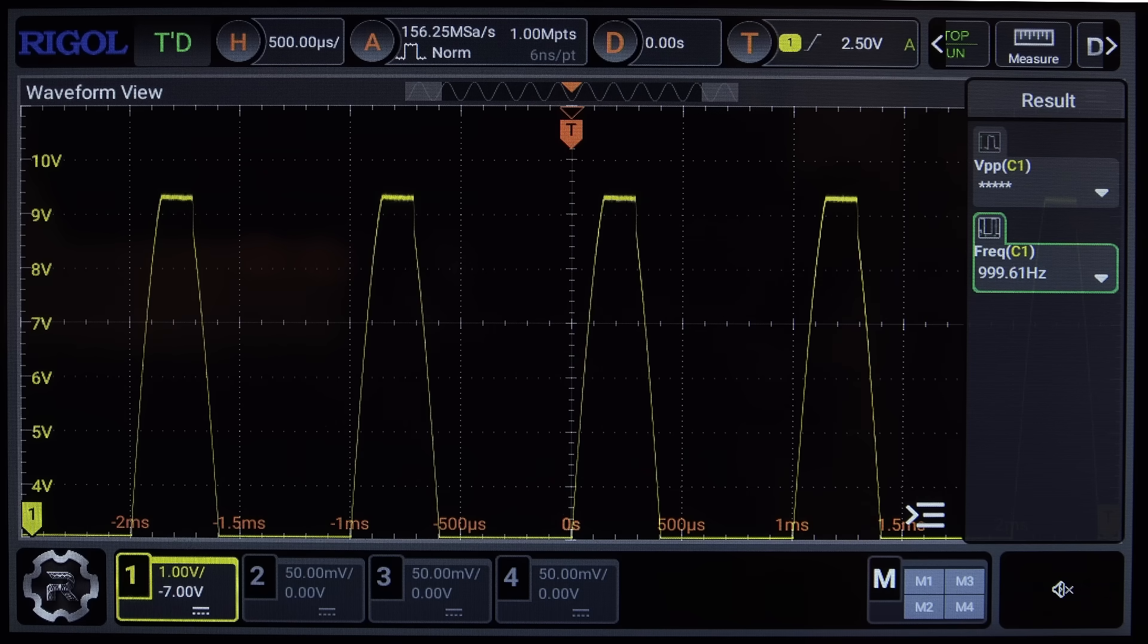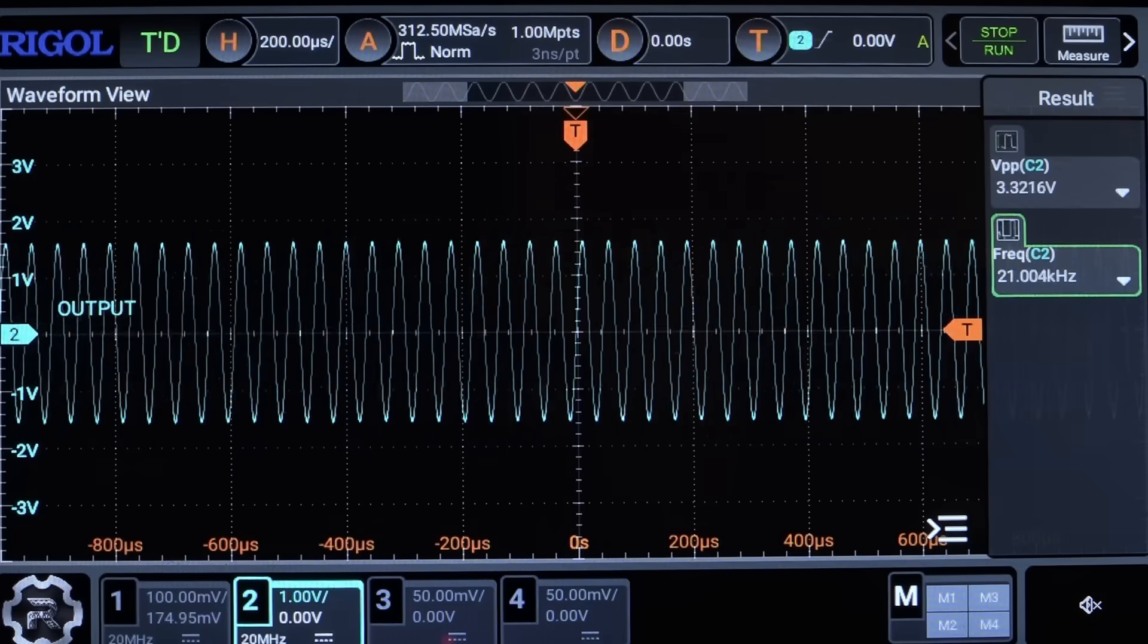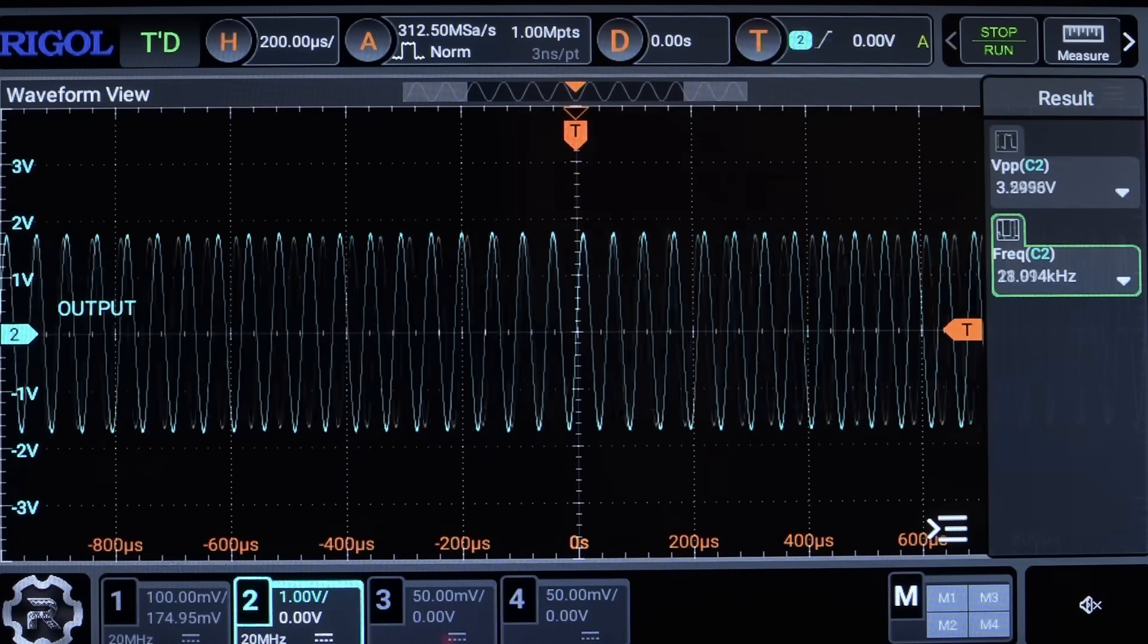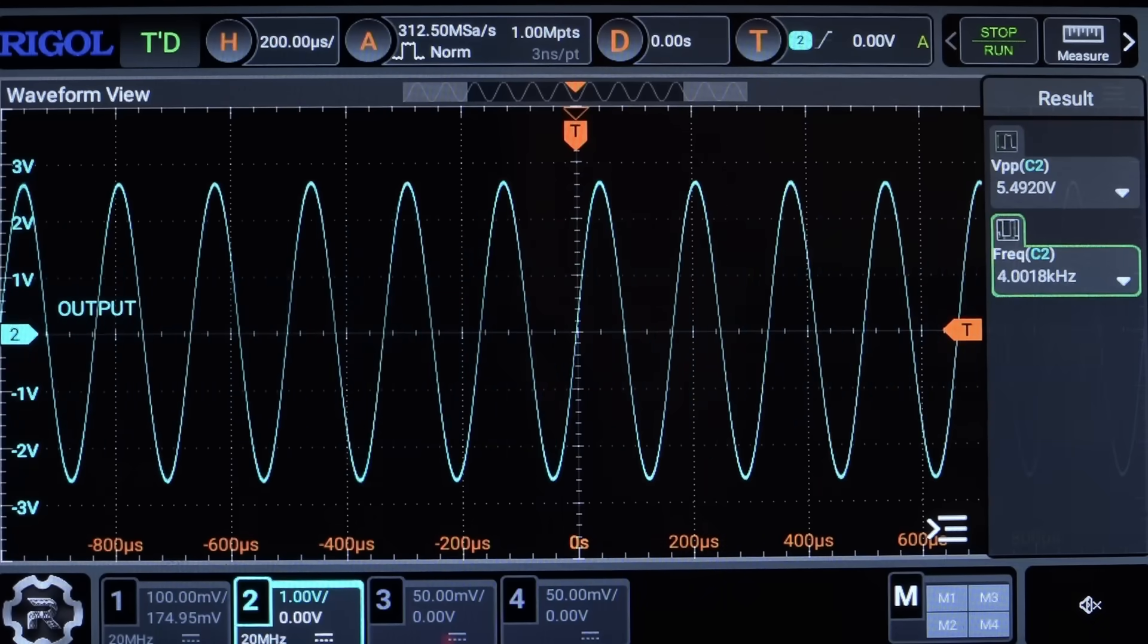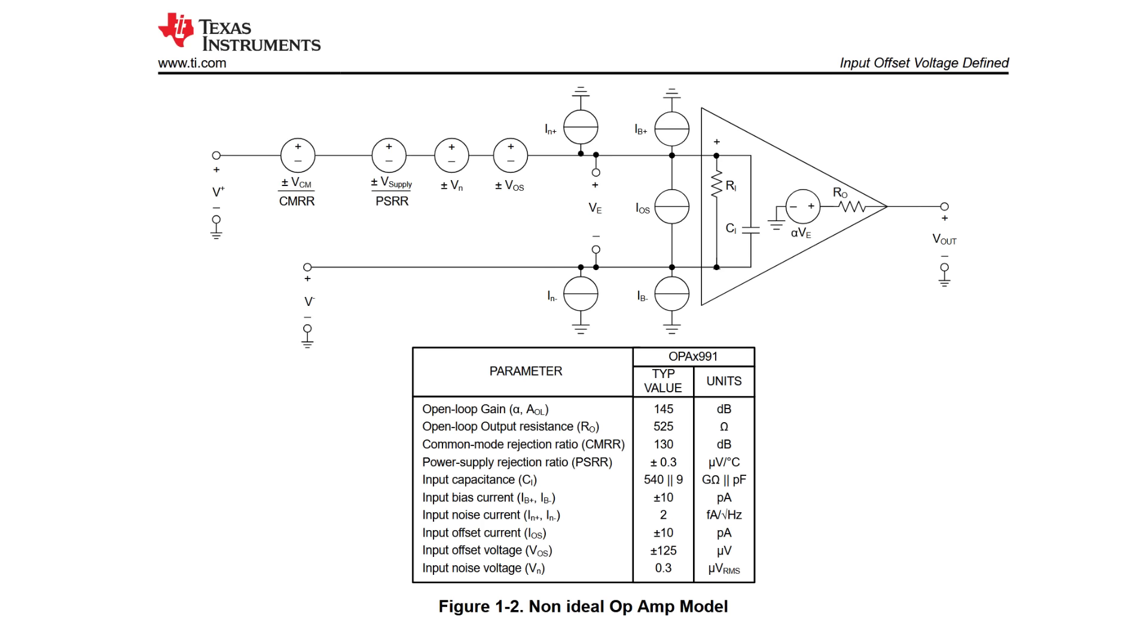We're going to talk about op-amp non-idealities like voltage swings, input offset voltage, slew rate, and gain bandwidth product. These properties limit the performance of an op-amp, and ultimately determine whether or not a given amplifier is going to work in your circuit. If you don't understand what op-amp non-idealities are, you're not going to be able to design and debug an op-amp circuit. So I'm going to help you with that.